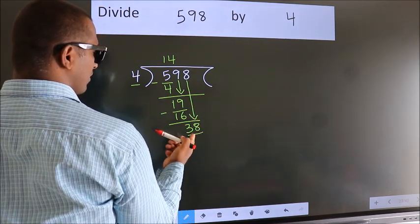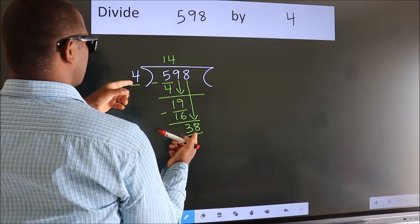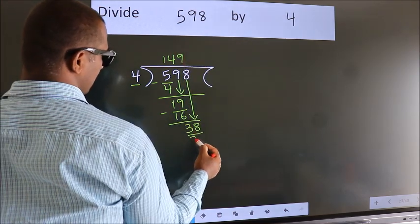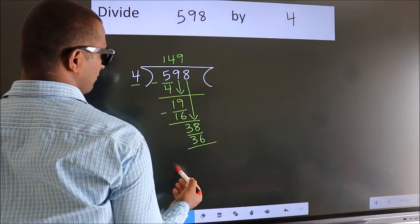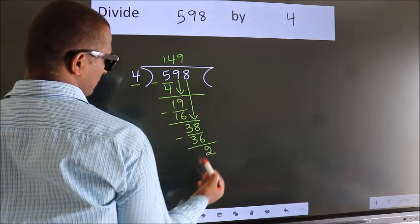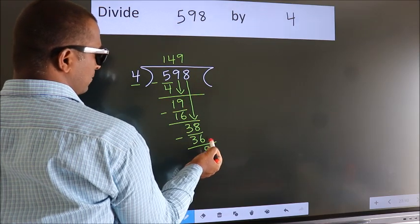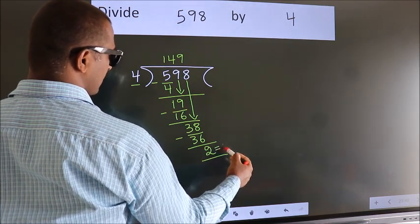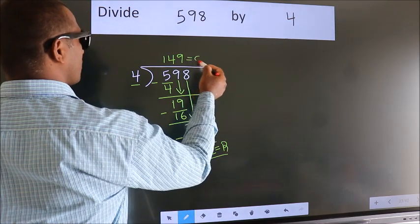A number close to 38 in the 4 table is 4 9s 36. Now we subtract. We get 2. No more numbers to bring down, so we stop here. This is our remainder. This is our quotient.